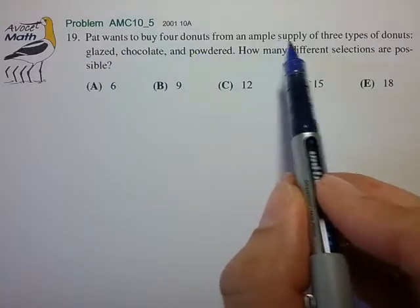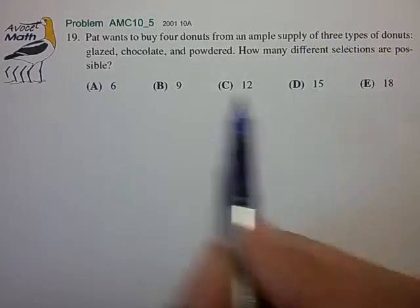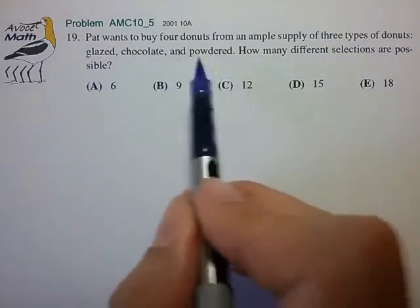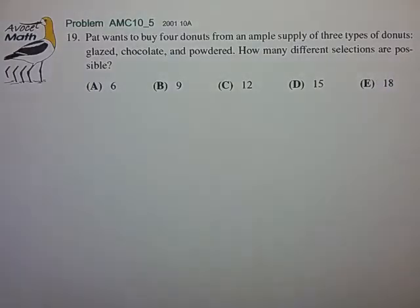Pat wants to buy four doughnuts from an ample supply of three types of doughnuts: glazed, chocolate, and powdered. How many different selections are possible?